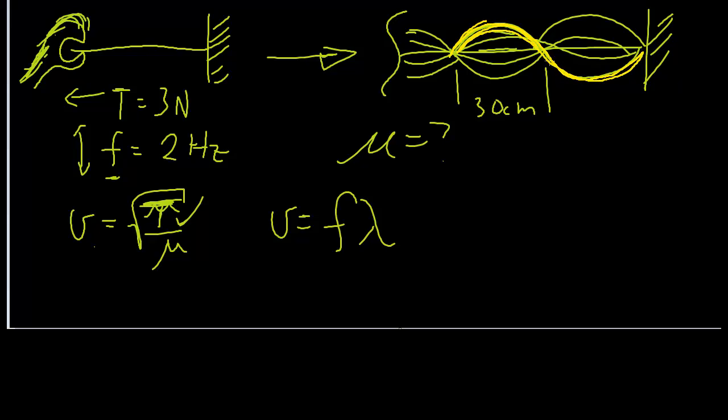One lambda is two humps. So the lambda here is not 0.3 meter, it's 0.6 meter.